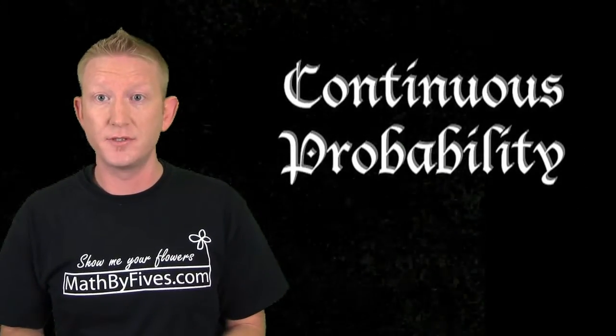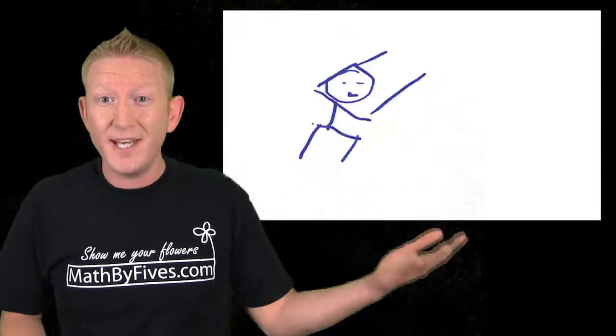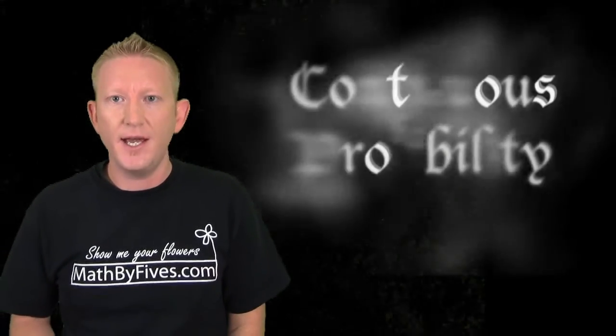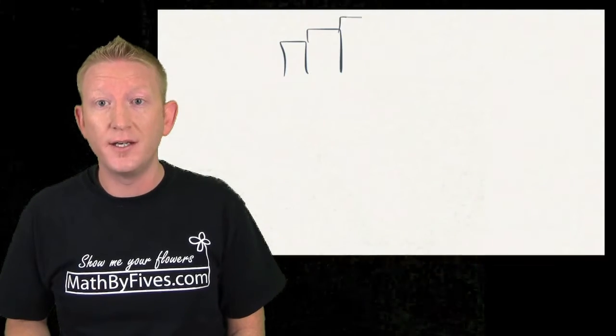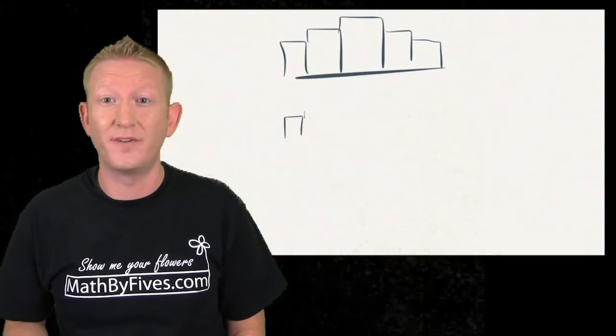Continuous probability distributions. We've taken the leap out of discrete and now we're in the continuous case. What do I mean? We're no longer counting on the integers: 1, 2, 3, 4, 5, 6, 7, 8.